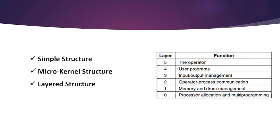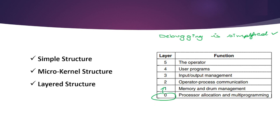We will look at five layers — layer 0 to layer 5. These layers are designed such that each layer only requires the functions of lower-level layers. Debugging is also simplified here — if lower-level layers are debugged and an error occurred, the error must occur only on that particular layer. The lower layers are thoroughly tested before moving the process to the upper layer, which is why debugging is very easy in this case.